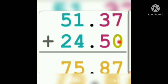Then you apply the normal addition method. 7 plus 0 is 7, 5 plus 3 is 8, 1 plus 4 is 5, 5 plus 2 is 7. Everything else is the same — addition, carry-over, subtraction — all the same. You just have to put the place value and decimal point properly.